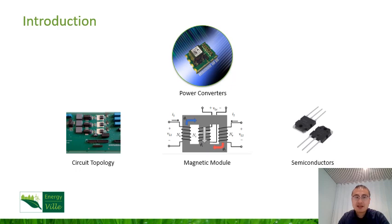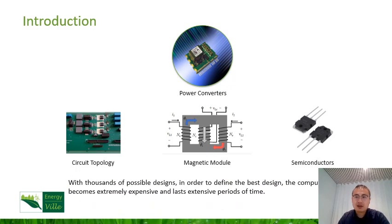Because combining each possible design topology and magnetics, and each choice of components, can result in a large amount of possible designs. With thousands of possible designs, in order to define the optimal one, the computation becomes very expensive and time consuming. However, AI has been developing rapidly, and it has the potential to deal with complex design problems and speed up the overall power converter design. That is why the topic of design automation of power electronics is drawing people's attention.